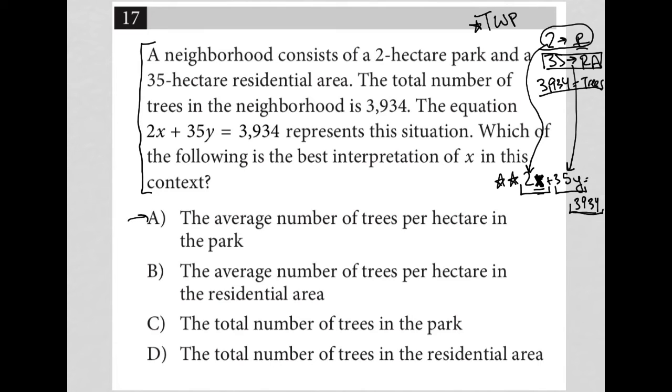Let's see—choice A: the average number of trees per hectare in the park. Well, that sounds about right. Let's see if there's anything else close to that. Choice B: the average number of trees per hectare in the residential area. No, that would be 35, not 2. Choice C: the total number of trees in the park.